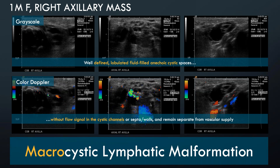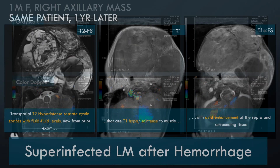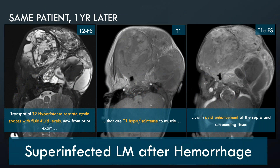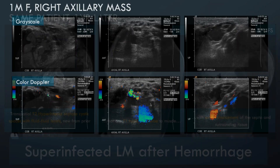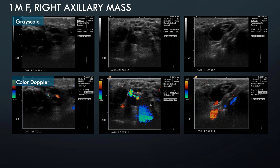If you have a significant macrocystic lymphatic malformation, I would generally advocate treatment regardless of whether they have symptoms, because as you could see, the malformation was much more complex a year later — it would have been much easier to treat when there were larger macrocysts. If you have a small isolated macrocystic lesion you could leave it alone, but most patients will eventually develop intralesional hemorrhage or superinfection. Sometimes if the patient is uncomfortable even when superinfected, I would still treat it.